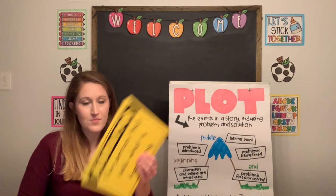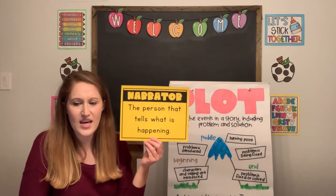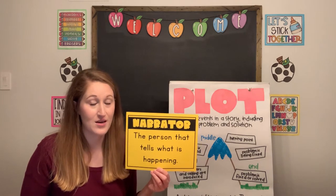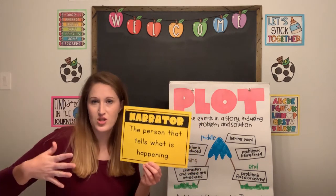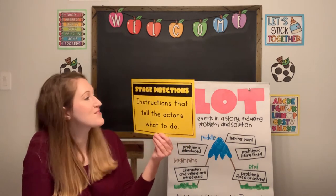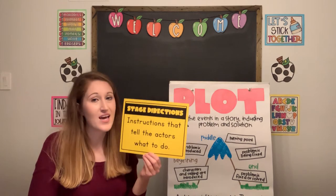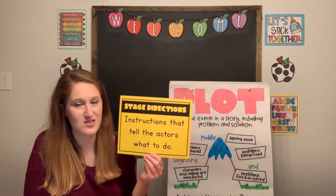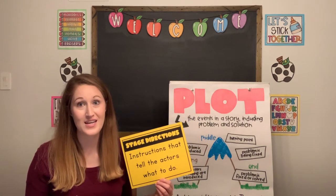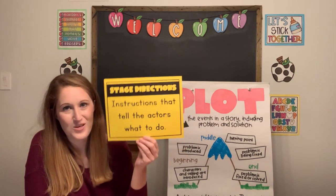We will see narrators. A narrator is a person that tells what is happening — kind of like a background character who's off to the side. He's not involved in the events that are happening, but he knows the background information of what's going on. We will also see stage directions, which are instructions that tell the actors what to do. Today we won't be doing many stage directions because it's just me by myself.